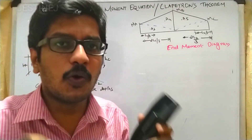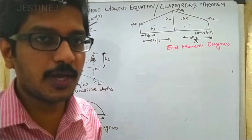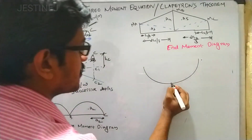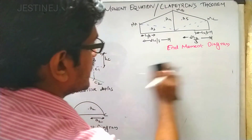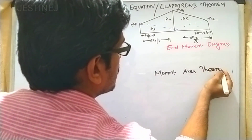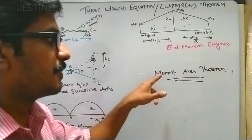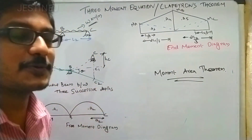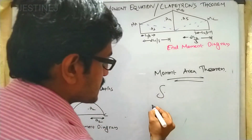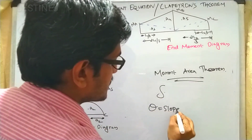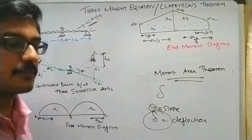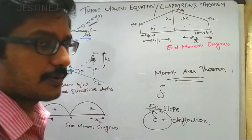When you apply a load over a beam, deflection is going to occur. You should note down the moment area theorem. I hope you remember this from Mechanics of Solids — the moment area theorem is used to find deflection. There are two theorems: the first is used to find slope, and the second is used to calculate deflection.